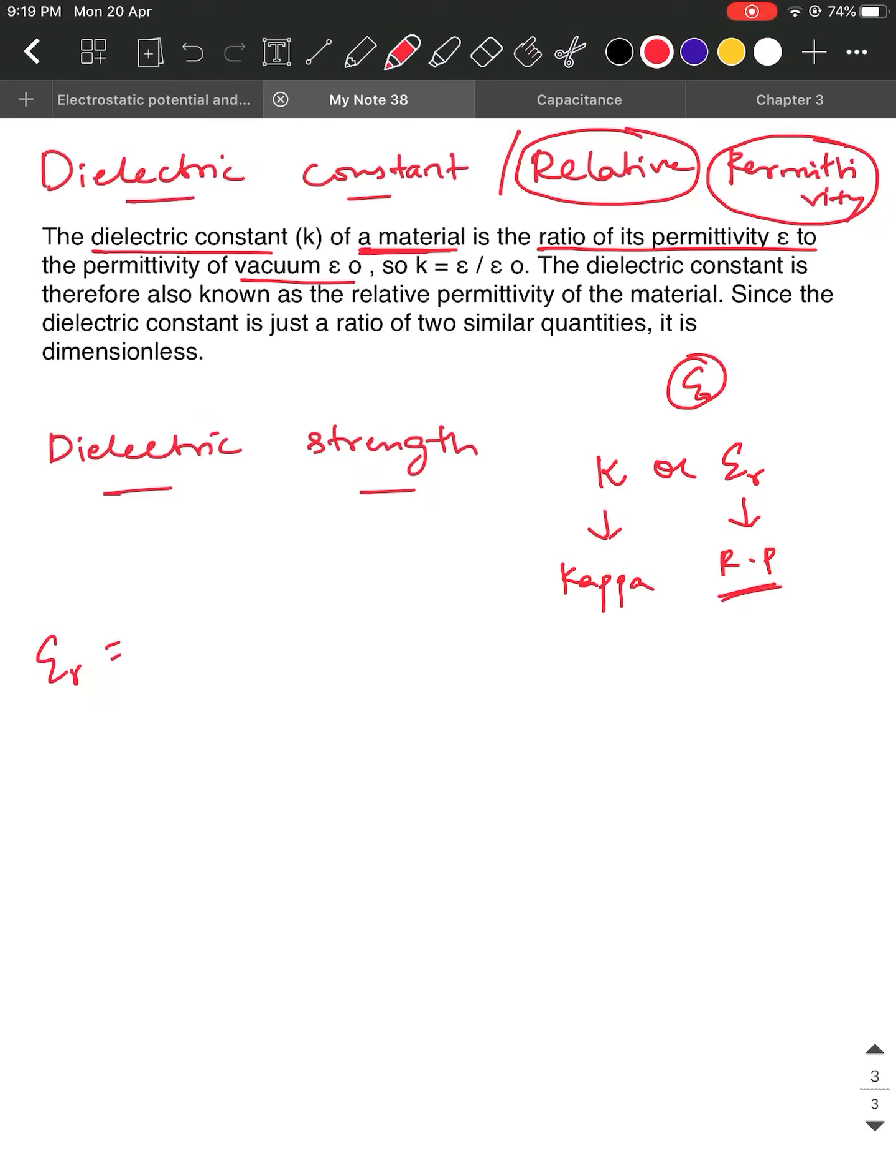Kappa or epsilon r is defined as the ratio of permittivity of the given medium, whichever medium you are trying to speak about, divided by the permittivity of free space. So this is what is called as relative permittivity.